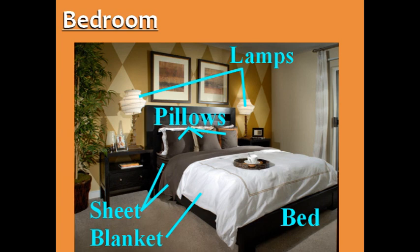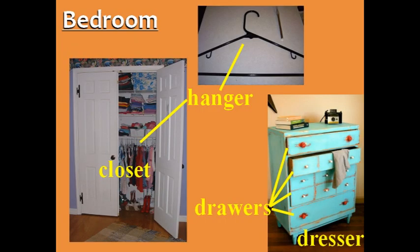Bedroom. Let's begin with the bedroom. The bed is the place where you sleep, probably with pillows, sheets, and blankets. In this photo, there are two lamps next to the bed. You keep your clothes in a closet on hangers, or in a dresser inside the drawers.